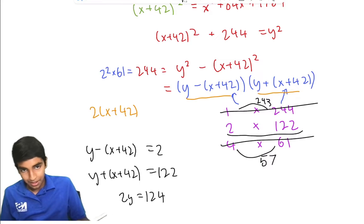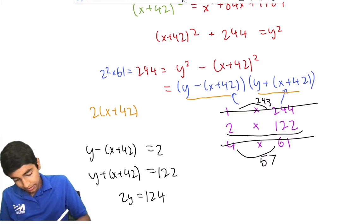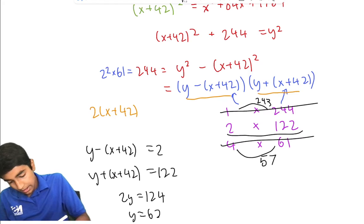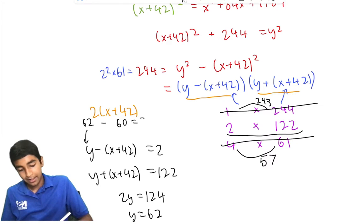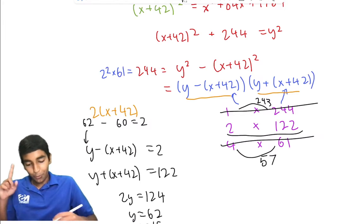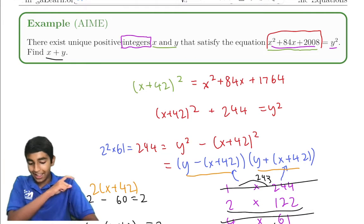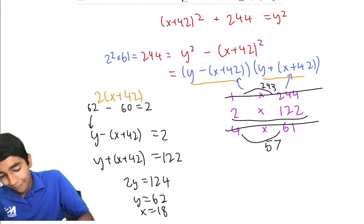We plug that in. 62 - 60 is 2, so x equals 18. But we're looking for x + y. 62 + 18 gives us our final answer, 80.